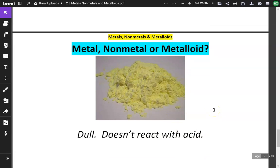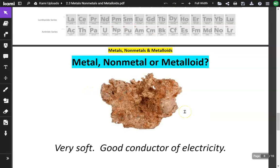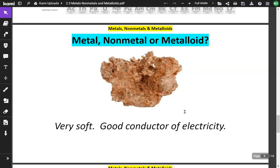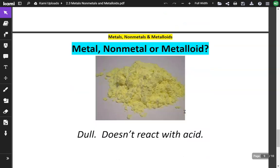Metal, non-metal, or metalloid. This looks like just a pile of egg. This is dull. Not shiny at all. And it was kind of hard to tell from this picture here, but that should be relatively shiny. Here, you can definitely tell that this isn't shiny. And it doesn't react with acid. So, this would be a non-metal. This is actually sulfur.